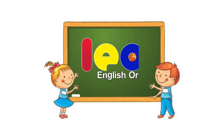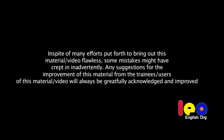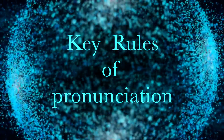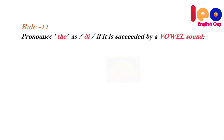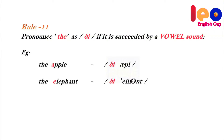English organization. Rule 11: Pronounce 'the' as 'thee' if it is followed by a vowel sound. Example: the apple, the elephant, the...